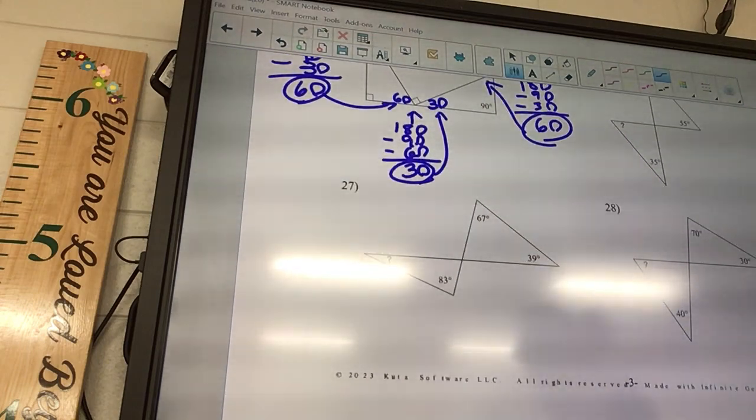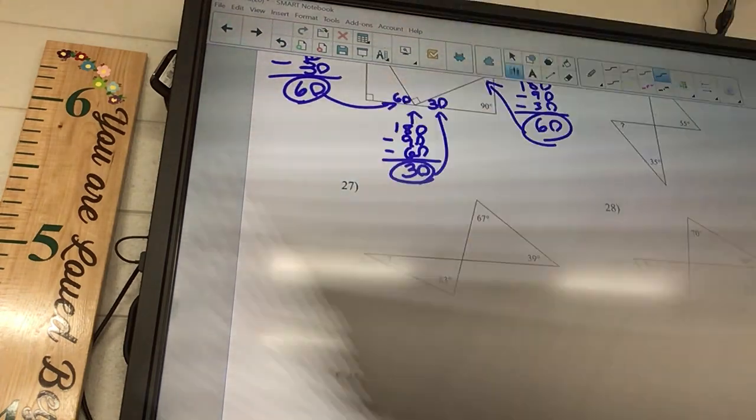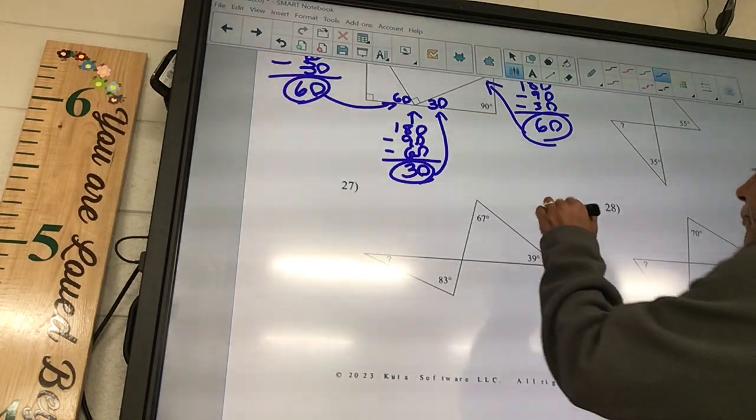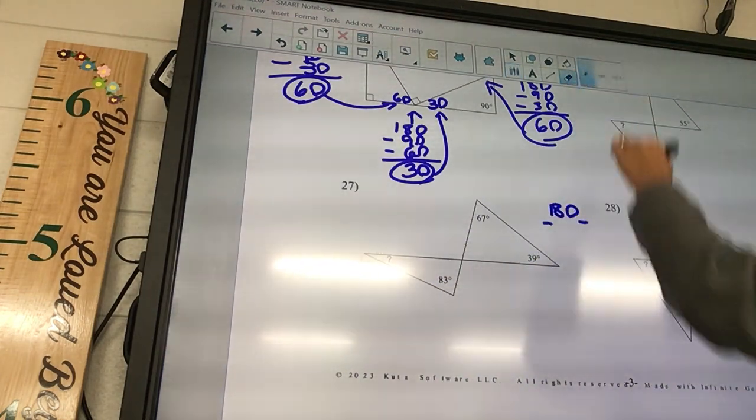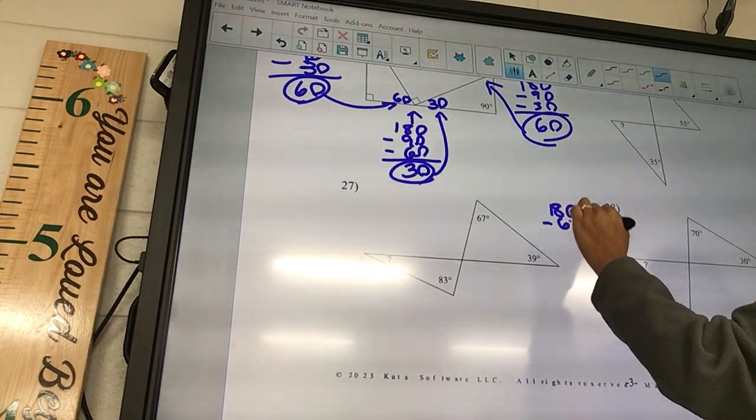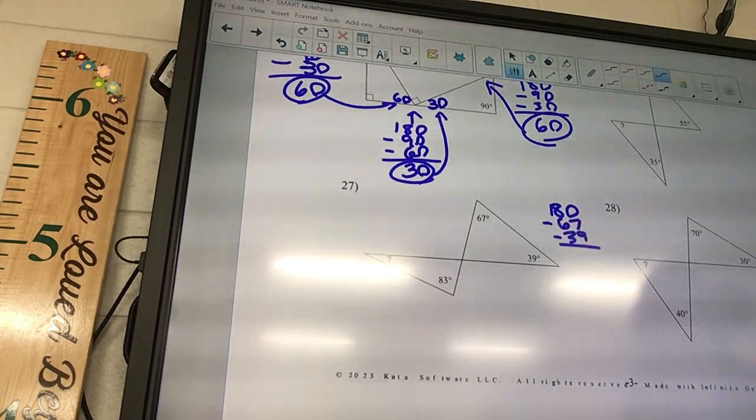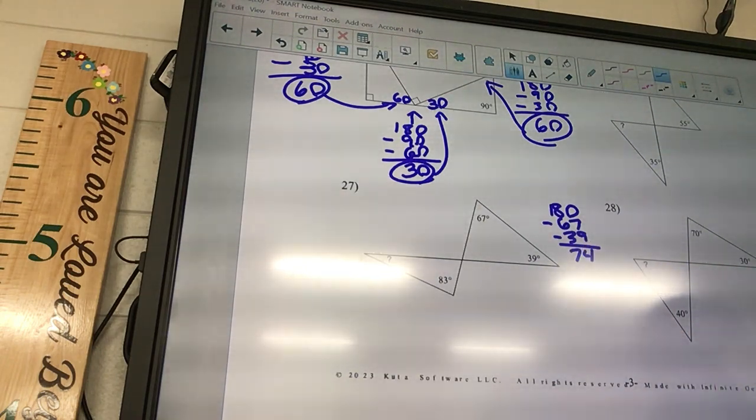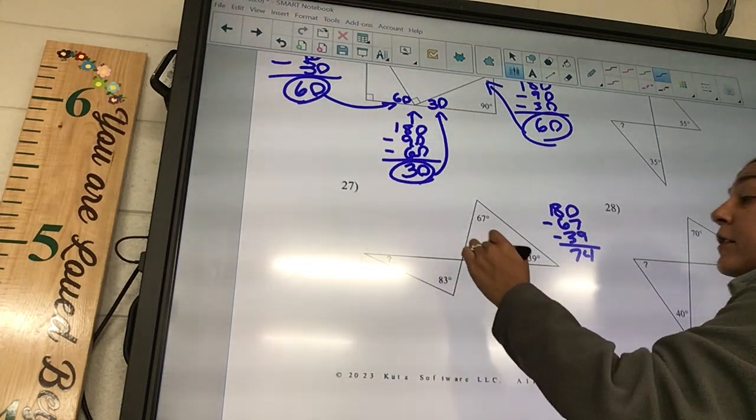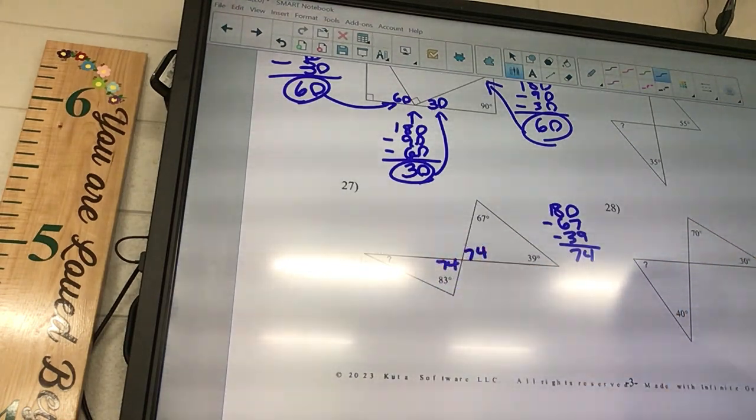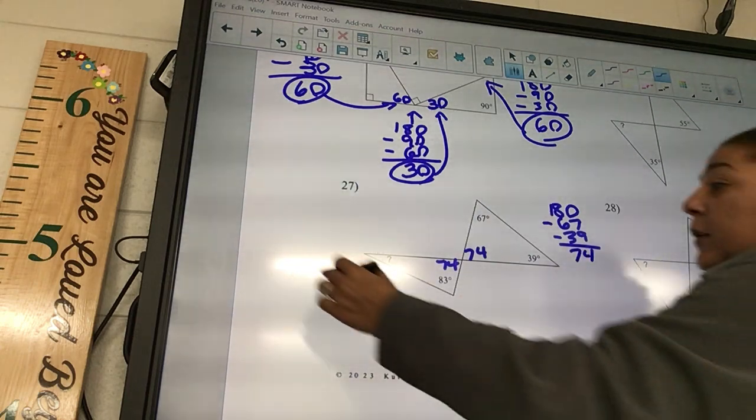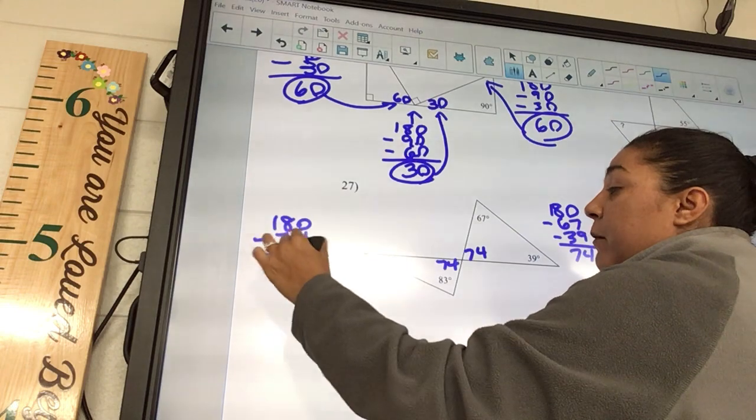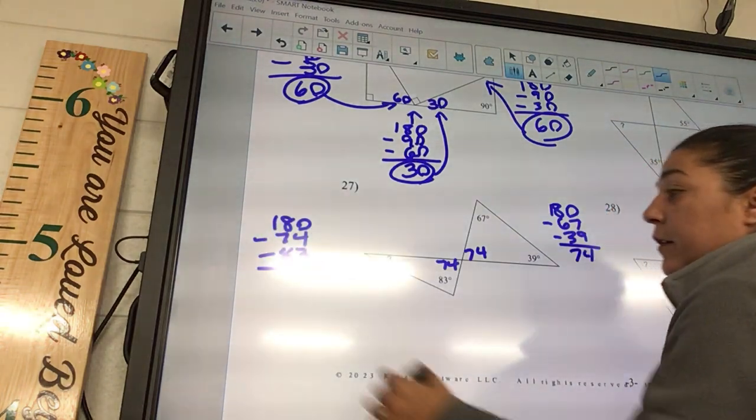Number 27. I'm going to say 180 minus what? Which one's coming first? 67 and 39. 74. Where does that go? Yeah, it's going to go here and here. And then for this one we're going to have 180 minus 74 minus 83. 23.